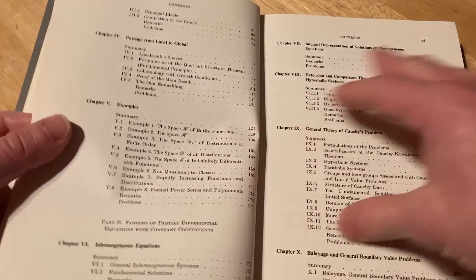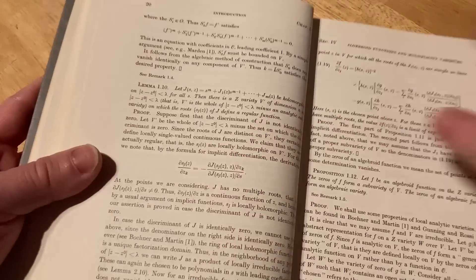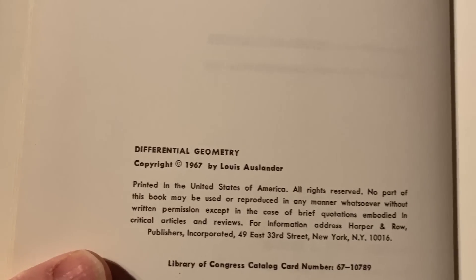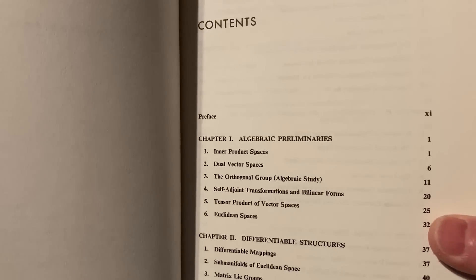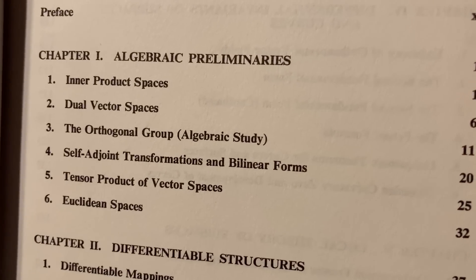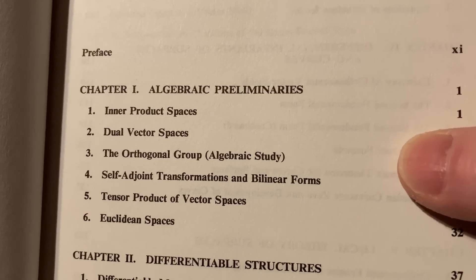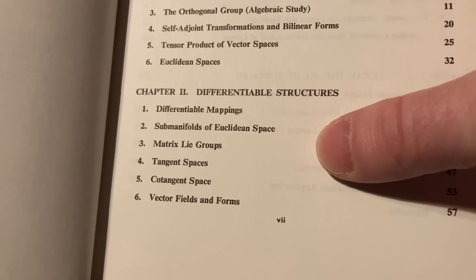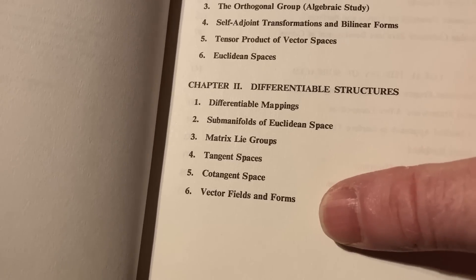We have an elegant book on Differential Geometry by Louis Auslander, Harper's Series in Modern Mathematics. It still has the dust jacket, and it's from 1967. Differential geometry is something you can study in college, but typically math majors don't — it's usually an elective, and sometimes taught in grad school. Many people study mathematics and never actually study differential geometry. It starts with basics familiar from linear algebra: inner product spaces, dual vector spaces, the orthogonal group. Then it goes on to differential mappings, matrix Lie groups, tangent spaces, cotangent space, vector fields, and forms.